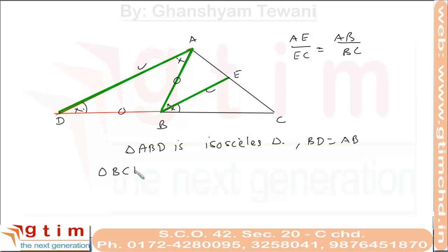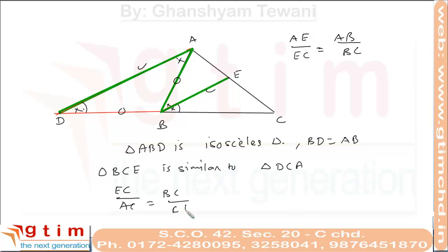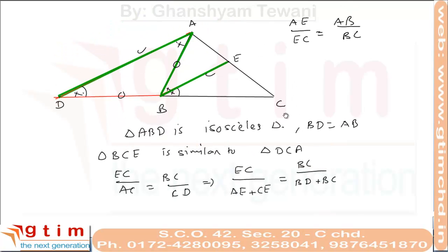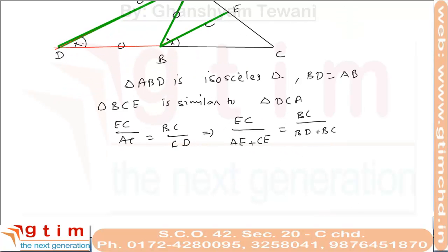Since the two sides are parallel and the angles are equal, triangle BCE is similar to triangle DCA. Then EC upon AC equals BC upon CD. AC is the sum AE plus EC, and CD is the sum BD plus BC. We already proved BD equals AB.